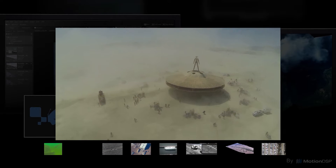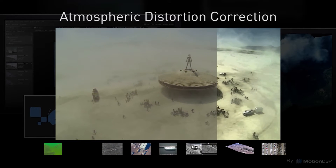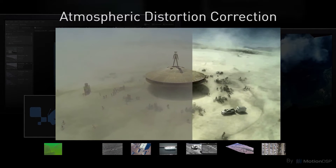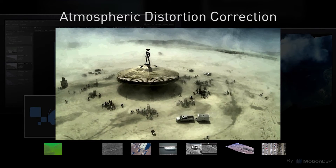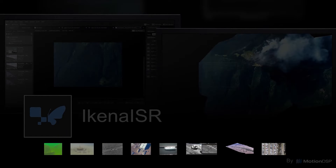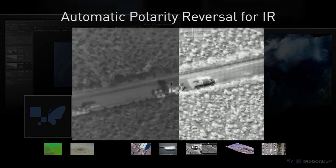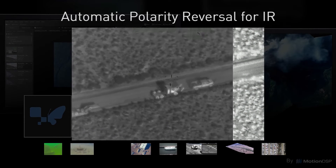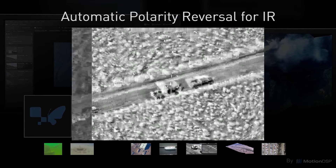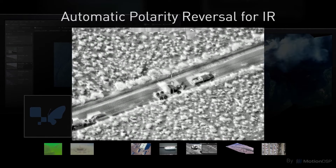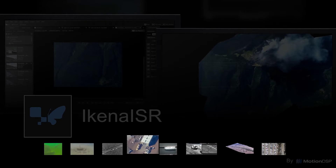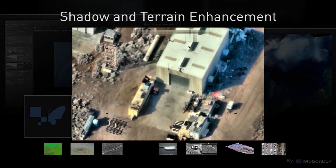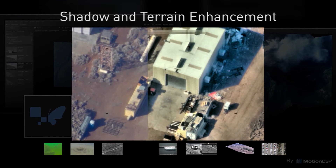With Ekena ISR's holistic approach to video fidelity improvement, you can address the multitude of issues encountered when analyzing video, mitigate environmental factors such as haze and poor lighting, quickly reverse polarity of IR video between white and black hot on the fly, and even use contrast filters to see in the shadows with the click of a button.